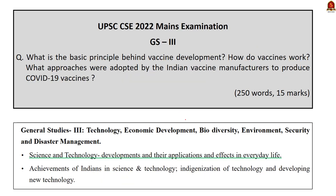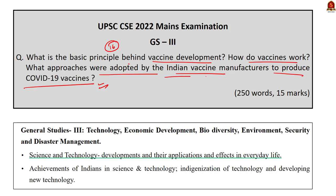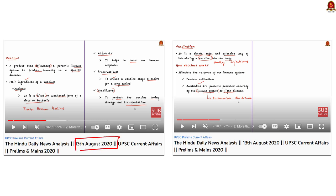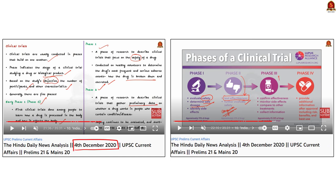Question number 16 in GS Paper 3: 'What is the basic principle behind vaccine development? How do vaccines work? What approaches were adopted by the Indian vaccine manufacturers to produce COVID-19 vaccines?' For the first part, refer to our 13th August 2020 Hindu News Analysis, where we discussed what a vaccine is, its major components, and how it works. For the second part, refer to our 4th December 2020 Hindu News Analysis, where we discussed the clinical trial procedure followed by Indian pharma companies for COVID-19 vaccine development. With these two videos, you can satisfactorily answer this question.